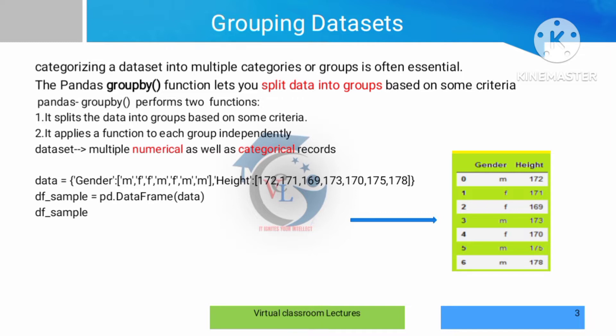We are going to discuss the data in a university context. We are going to work on the dataset, and we are going to see department-wise grouping, as well as gender-wise grouping — male and female categories.